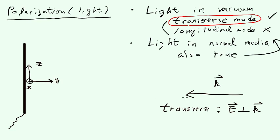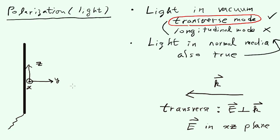The light is coming in this direction. Because of the transverse nature of the light, the E field is now in the XZ plane. For the purpose of this discussion, it's convenient to focus our attention on the YZ plane. The electric field could be pointing along the X direction, but notice that the X direction is actually perpendicular to this antenna.